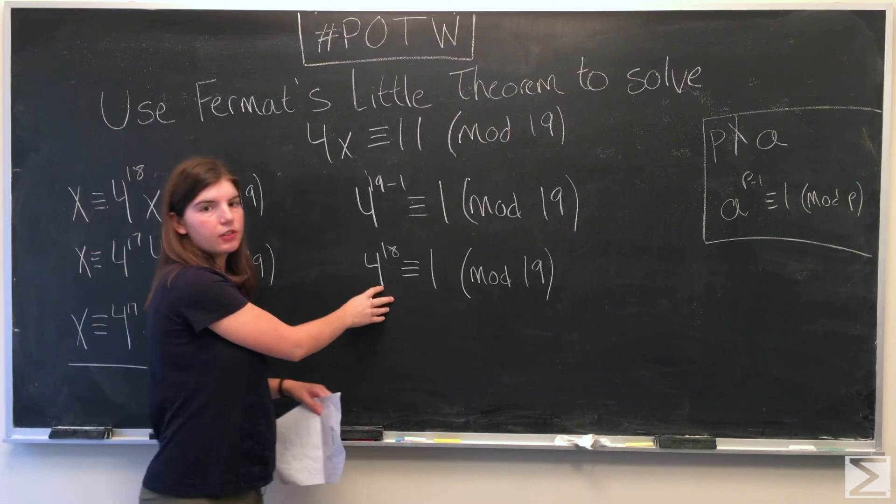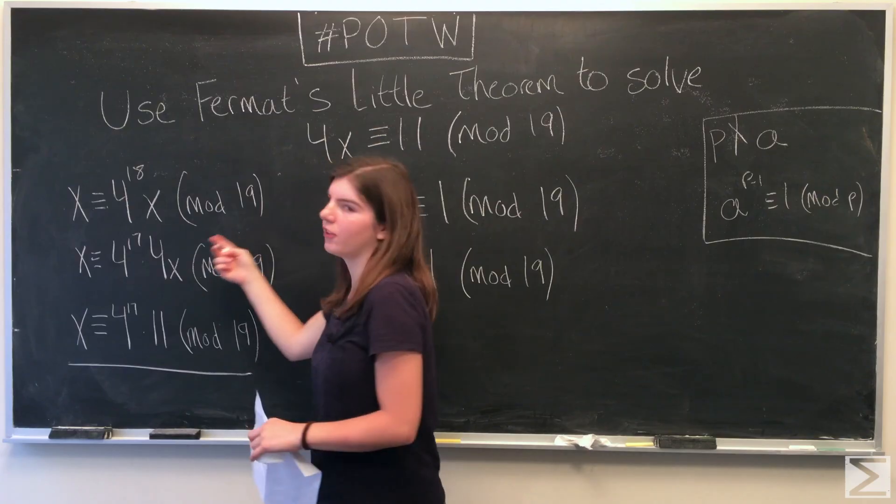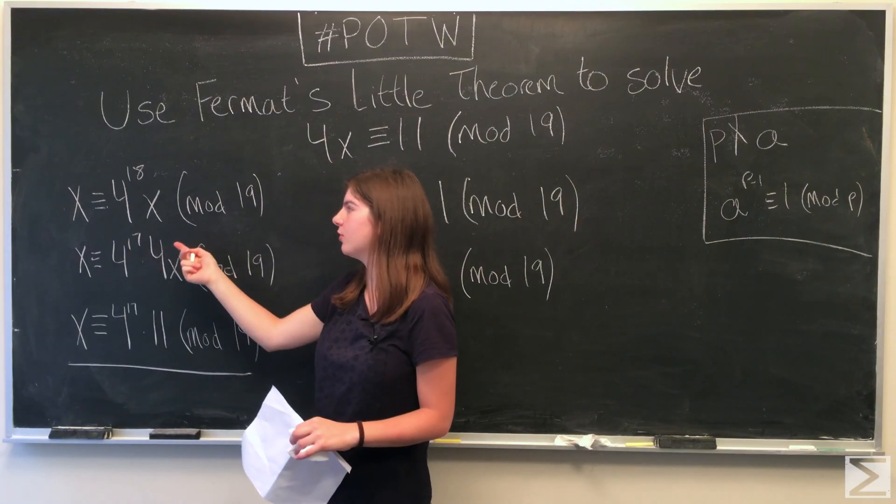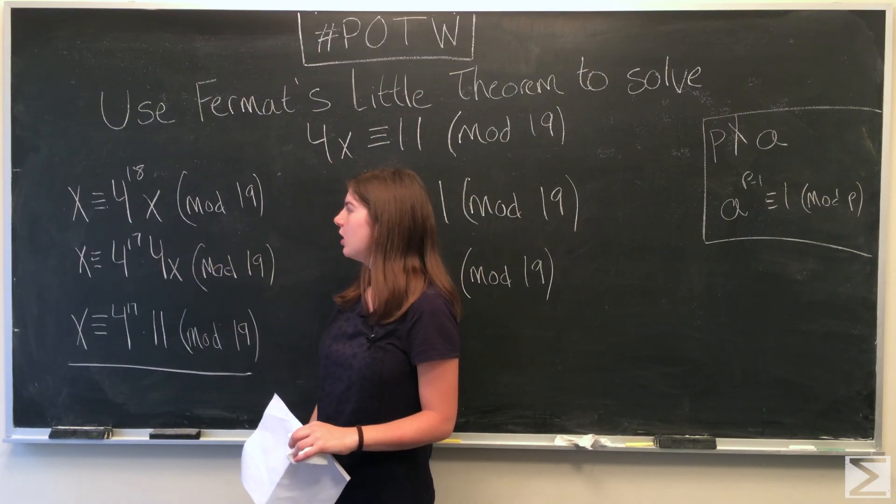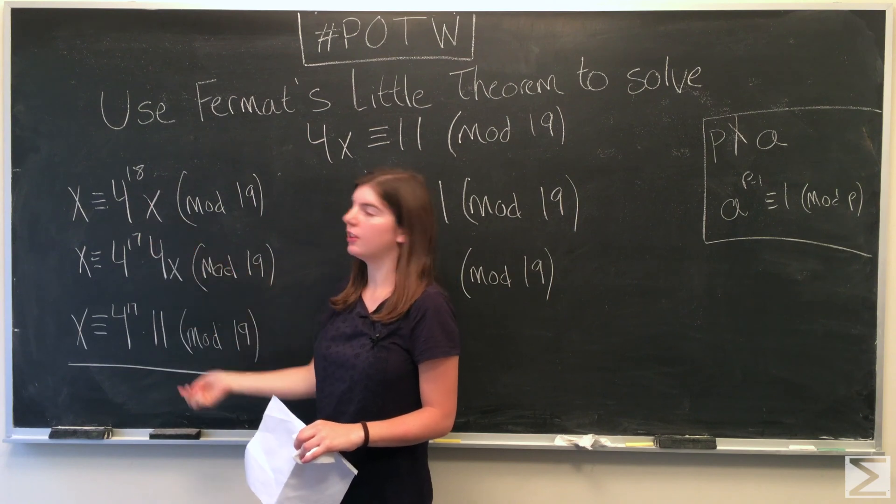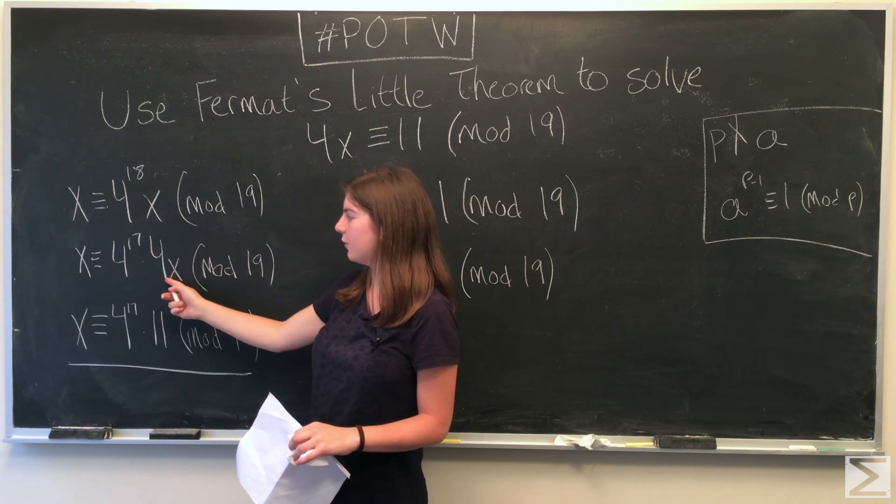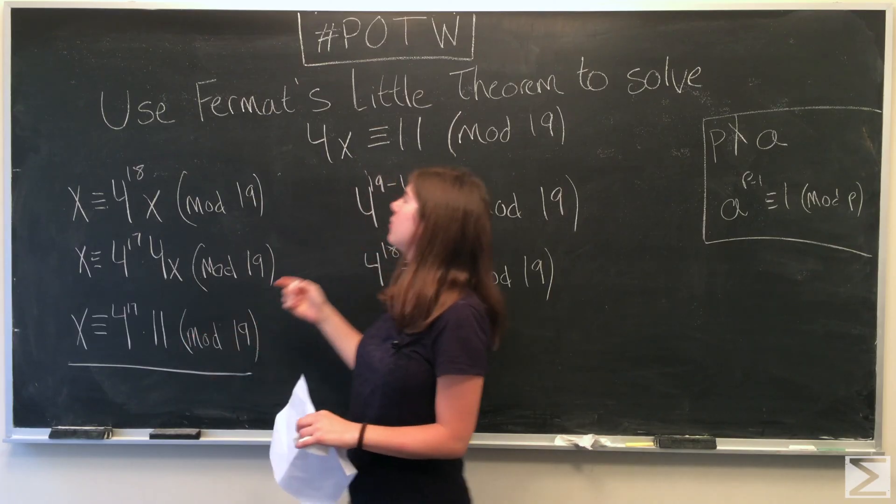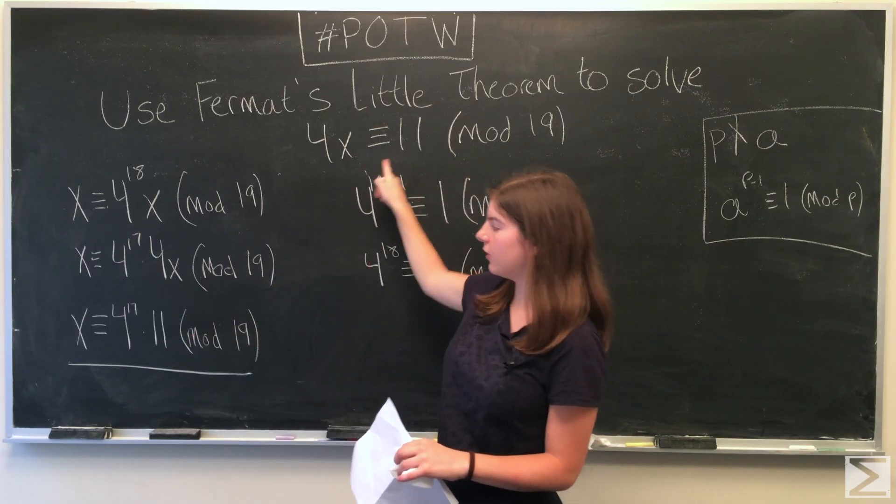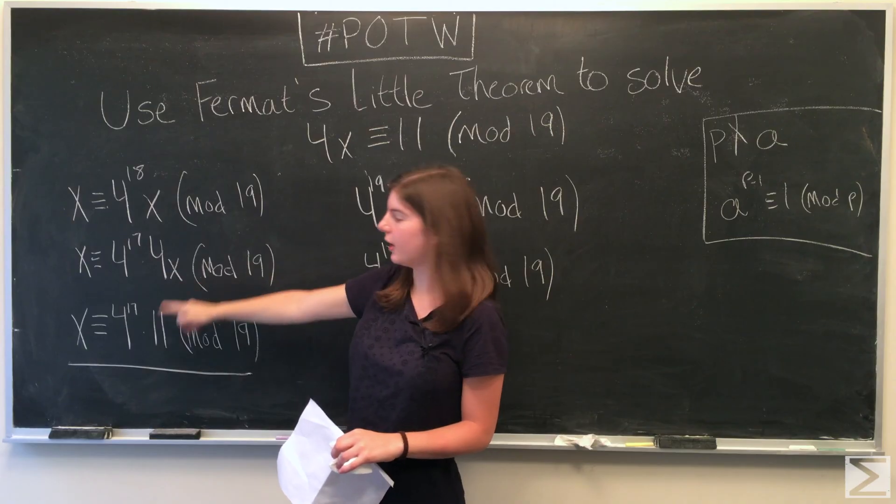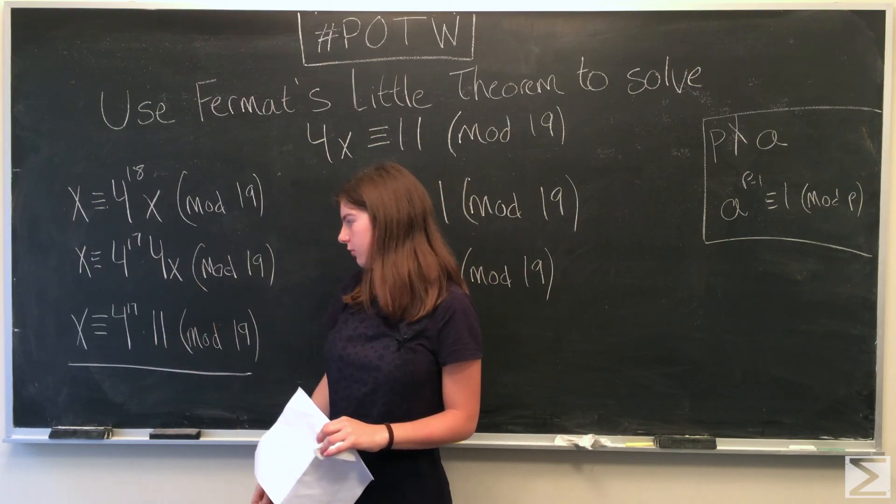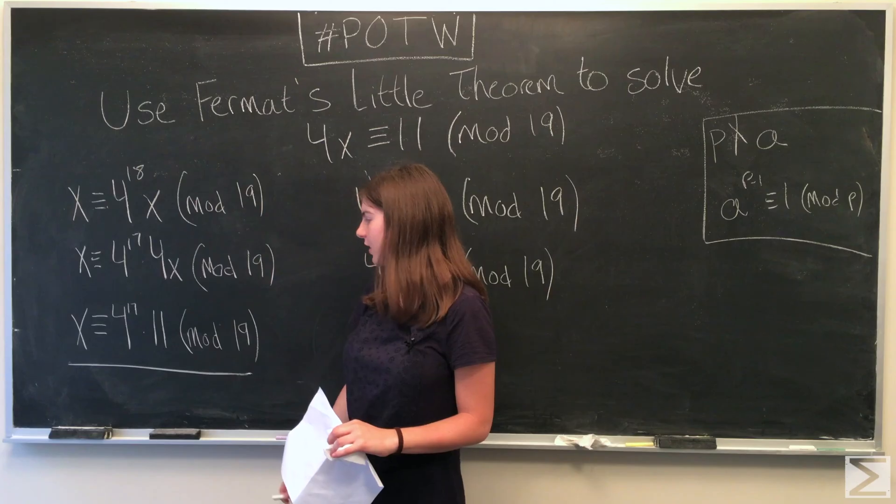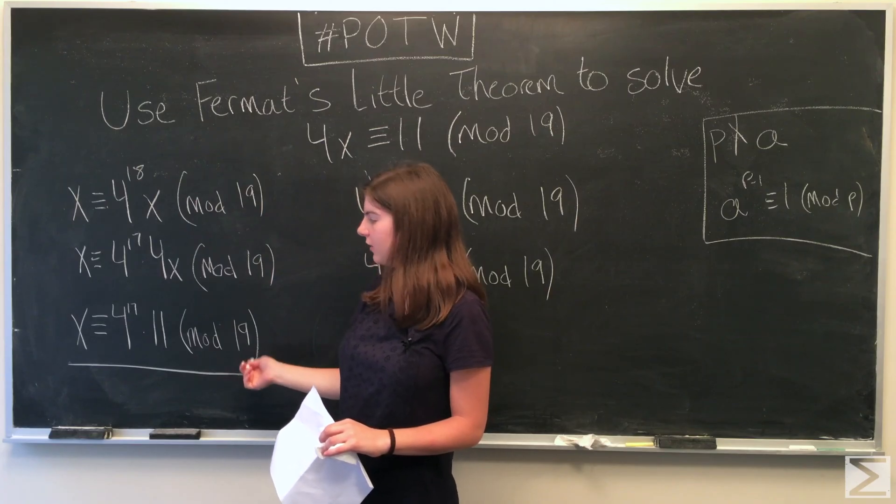So we'll take this congruence and multiply both sides by X. We have X is congruent to 4 to the 18th X. Then we rewrite 4 to the 18th as 4 to the 17th times 4. We have 4X, and we know that 4X is congruent to 11 modulo 19, so we replace the 4X. So we have X is congruent to 4 to the 17th times 11 modulo 19.